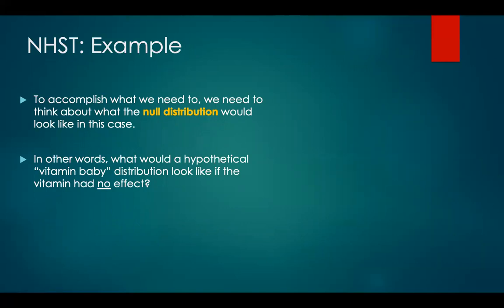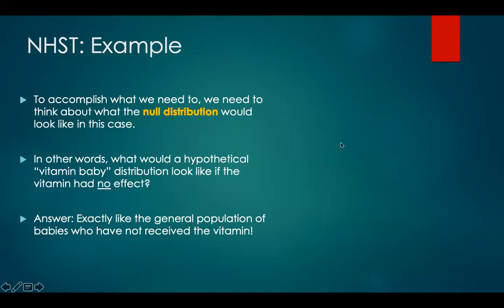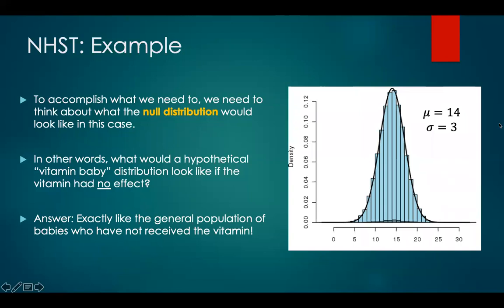To test our hypothesis that the vitamin will cause babies to walk earlier, we need to think about what the null distribution would look like — what would a hypothetical vitamin baby distribution look like if the vitamin had zero effect on walking age? The answer would be exactly like the general population of babies who have not received the vitamin. Under the null hypothesis, that distribution would be the same normally distributed distribution with a mean of 14 months and a standard deviation of 3 months, because the null hypothesis states that the vitamin is going to have no effect on walking age.